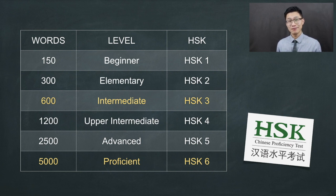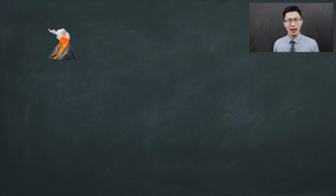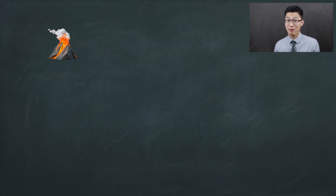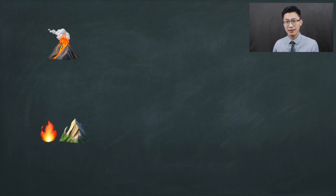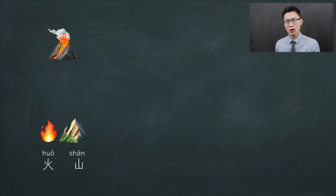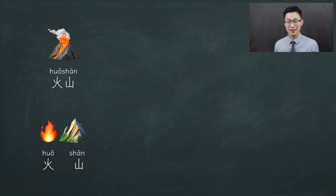Without further ado, let's get started! Let's say we want to figure out the word for volcano. What will you introduce to a friend who has never seen a volcano before? Maybe you will say it's a mountain, but with fire — pretty hot. And in Chinese, we already learned the character for fire and mountain: huo for fire, shan for mountain. So what's the word for volcano? Huo shan — fire mountain. That's it! We just created our very first Chinese word.